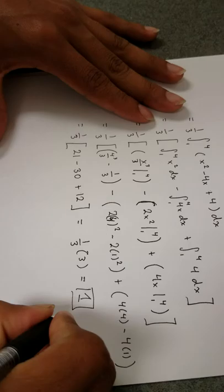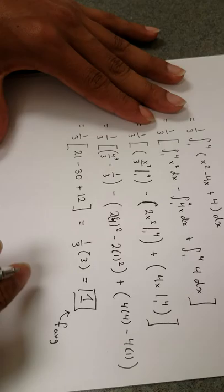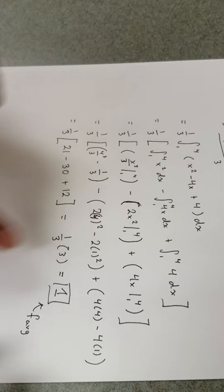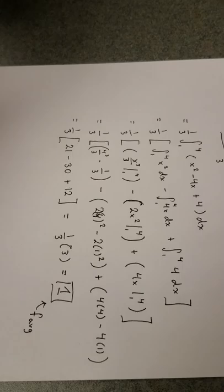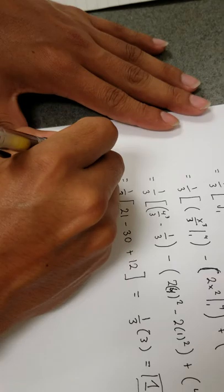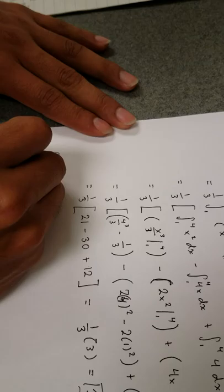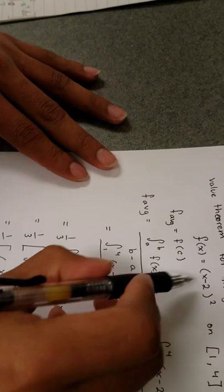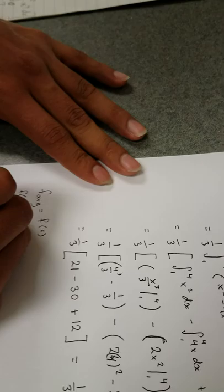This equals 1, so f average equals 1. Now we have to find the value of c where the average equals the function. The way we do that is to set f average equal to f(c), which is what we claimed at the beginning.